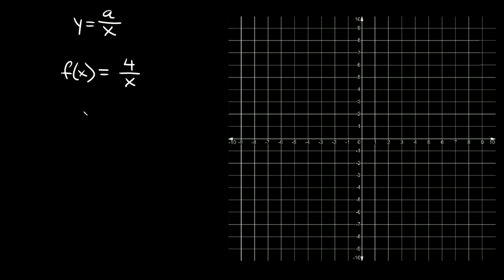In this video I'm going to teach you how to graph rational functions, and we're going to cover three of the more basic forms that you're going to see. We're going to start with the easiest form, which is y is equal to a over x — basically just y equals some number over x. The example we're going to do first is f of x is equal to 4 over x.